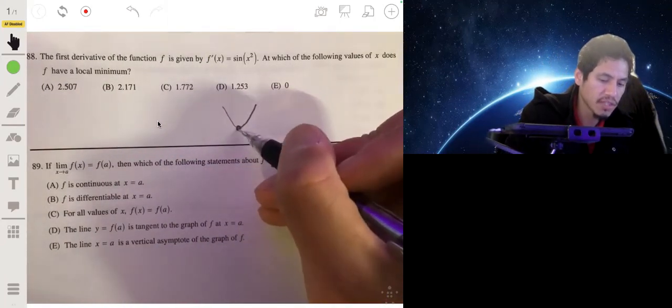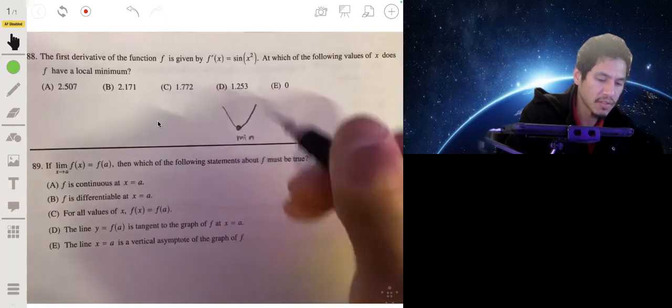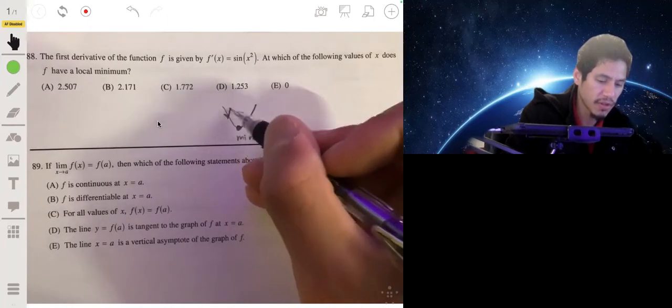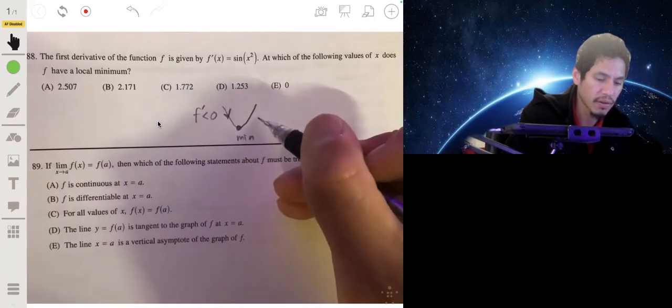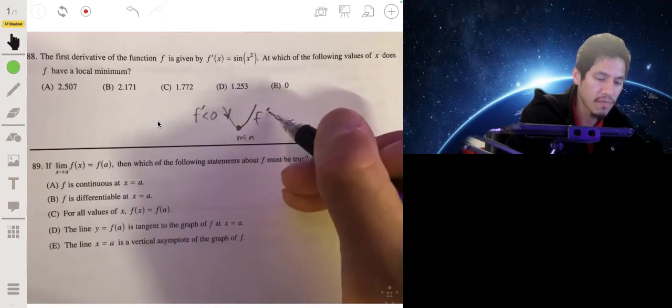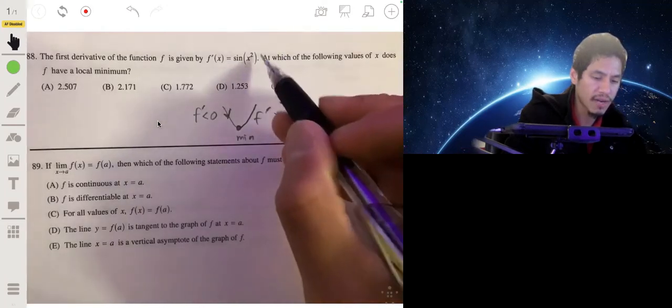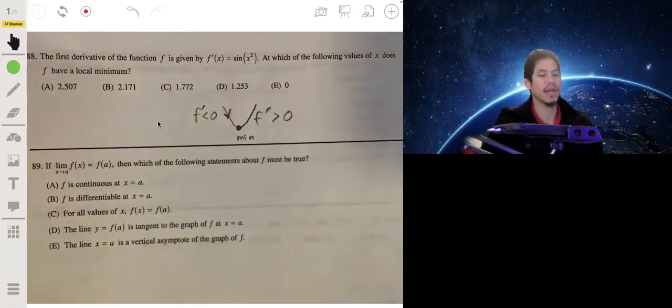Let me just draw an example. A minimum will be at the bottom of the graph. So before the graph, the derivative is negative, the derivative is less than zero. After that point on the graph, the derivative is positive.